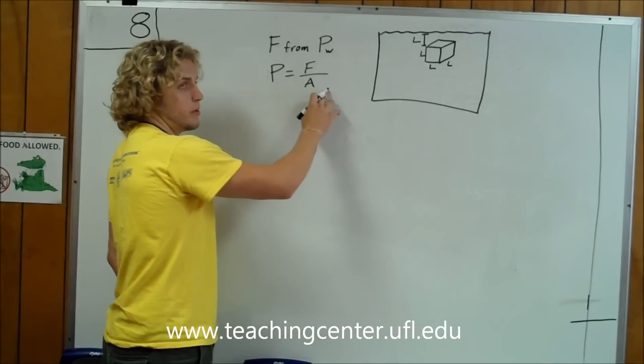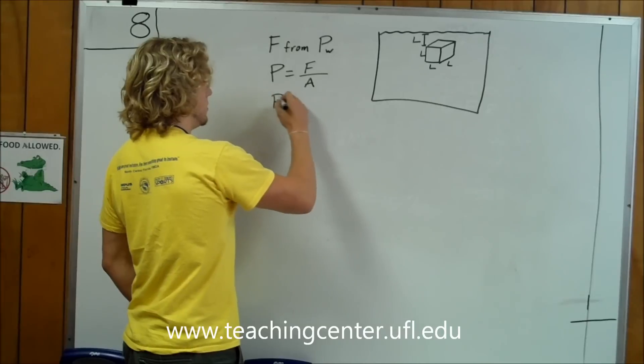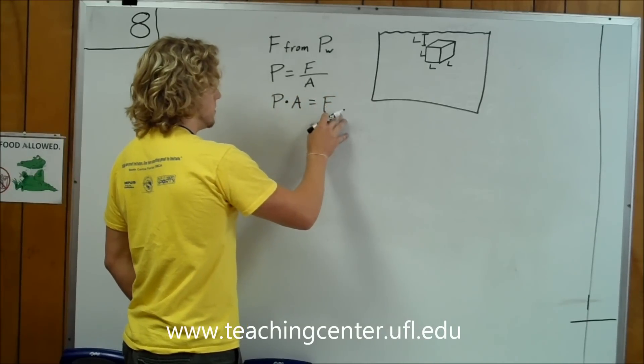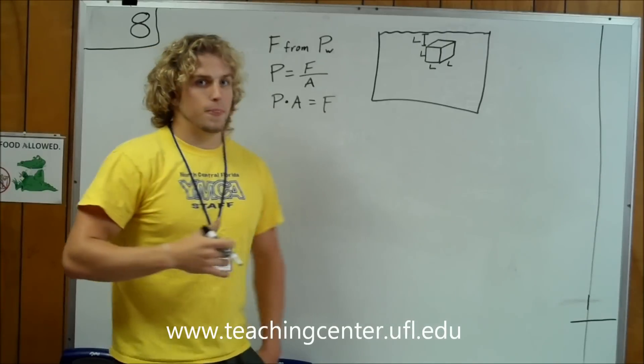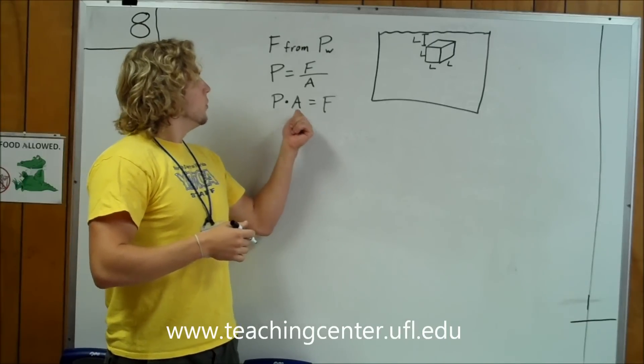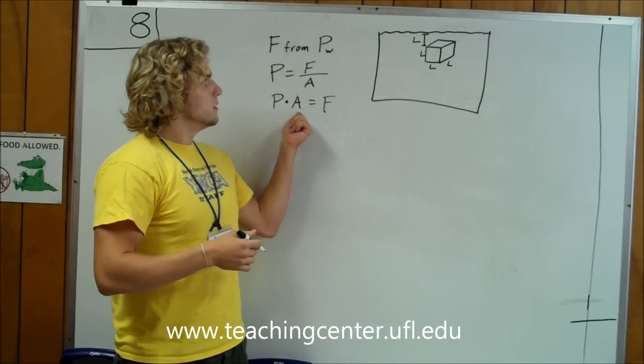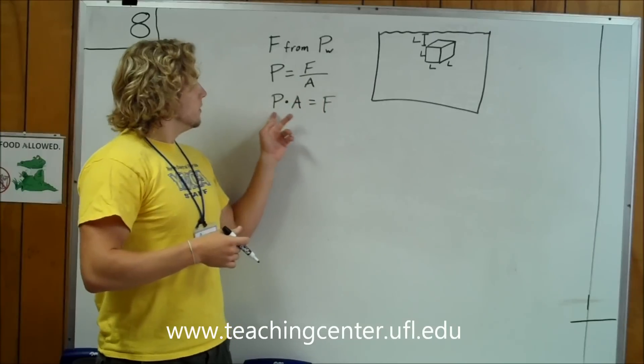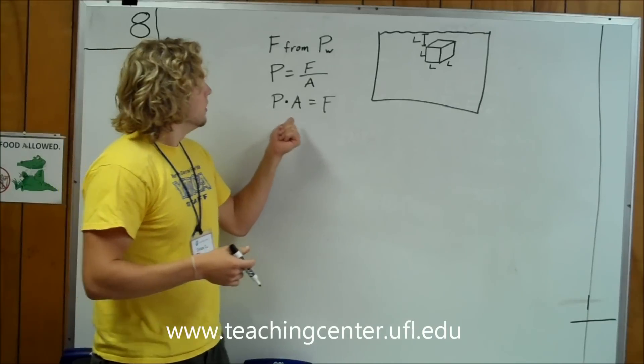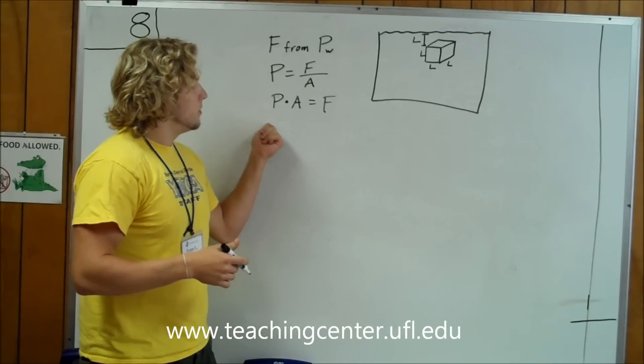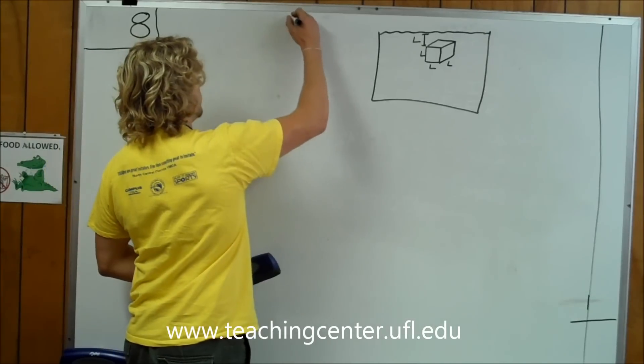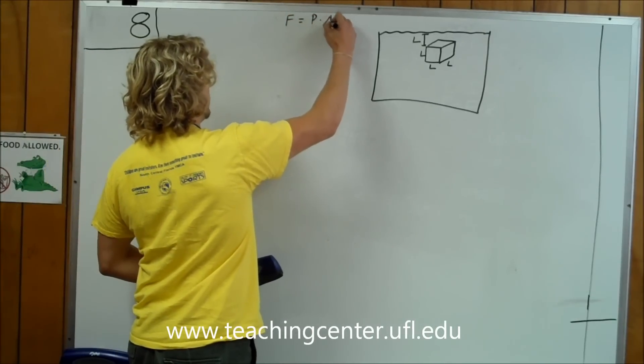Force from pressure is you take the pressure, multiply it by the area, and that's equal to the force. Now we know the area as L squared, but we don't know really anything else. We don't know the pressure. We need to find out the pressure first. Force is equal to pressure times area.